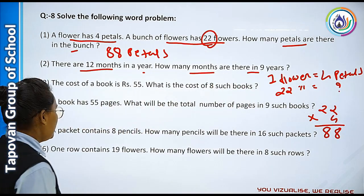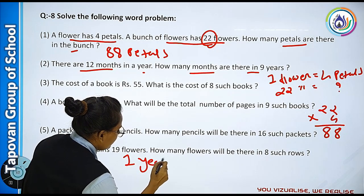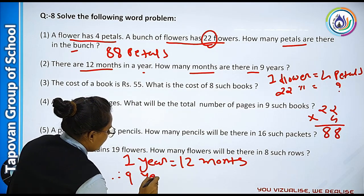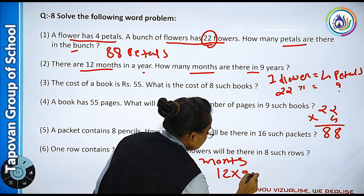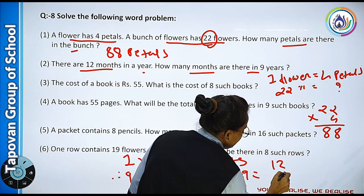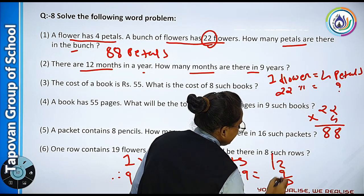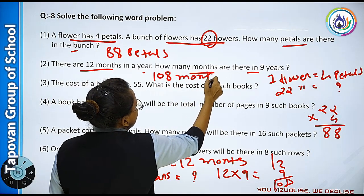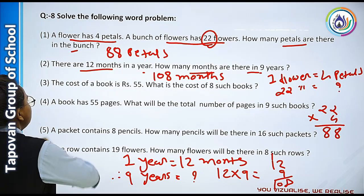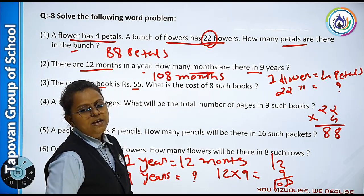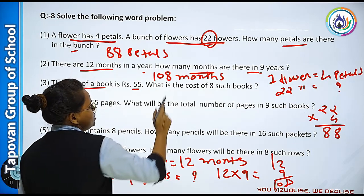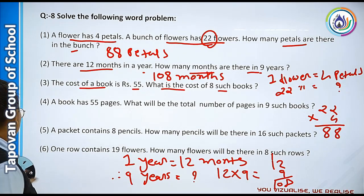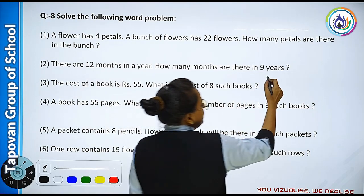How many months are there in nine years? So 12 into 9 — 9 twos are 18, 1 nine is 9, and 10 — so the answer is 108 months. In nine years there are 108 months.